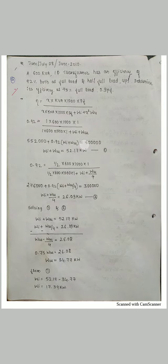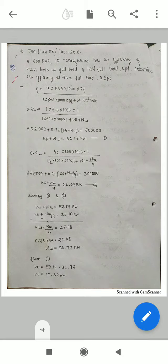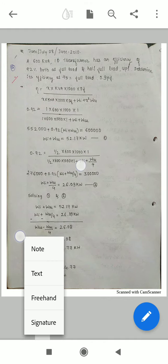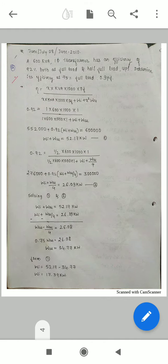Next, for half full load, x equals 1/2, and eta equals the same efficiency. Here I've taken x as 1/2. I've written Wi plus Wcu/4 because (1/2)² equals 1/4. So I've written Wcu divided by 4. By doing the arrangement, I got this equation.